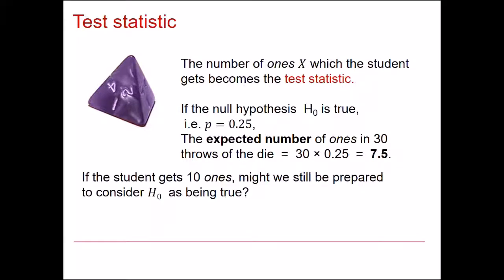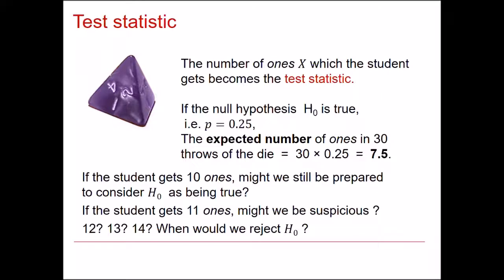So would we be suspicious of 10 ones from 30 throws of the dice? Perhaps. What about 11, 12 or 13? At what point would we say, well, there are too many ones appearing and therefore we will reject H0?